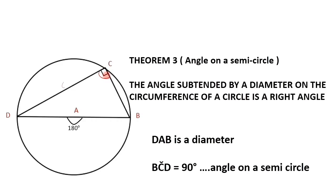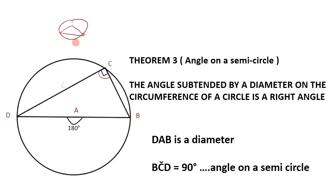We know that if the diameter subtends an angle on the circumference, it should be equal to 90 degrees. Note that the theorem requires the diameter to subtend an angle on the circumference. If the angle is not subtended on the circumference, it cannot be equal to 90 degrees. The angle must be subtended on the circumference in order to be a right angle.